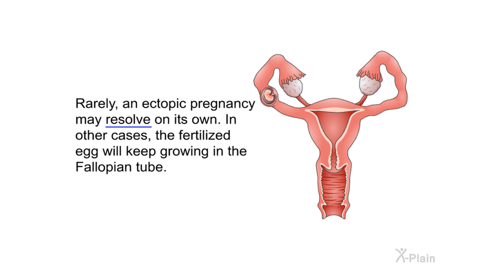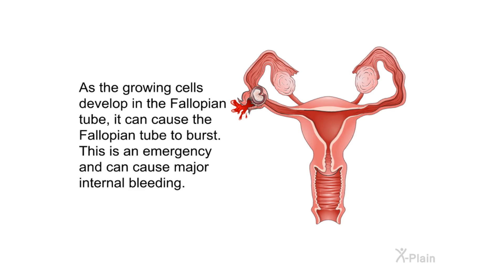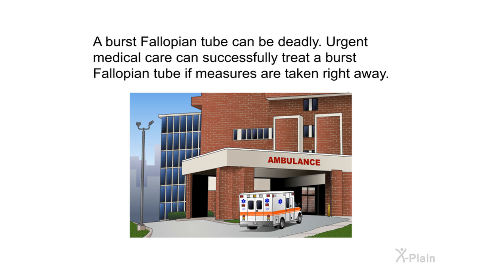Rarely, an ectopic pregnancy may resolve on its own. In other cases, the fertilized egg will keep growing in the fallopian tube. As the growing cells develop, they can cause the fallopian tube to burst. This is an emergency and can cause major internal bleeding. A burst fallopian tube can be deadly, but urgent medical care can successfully treat it if measures are taken right away.